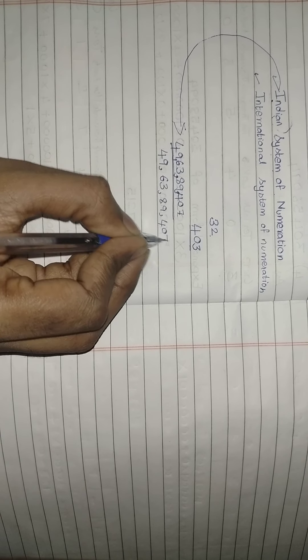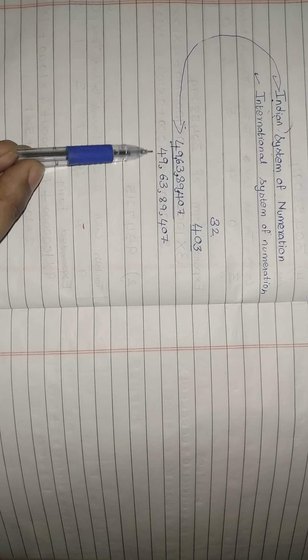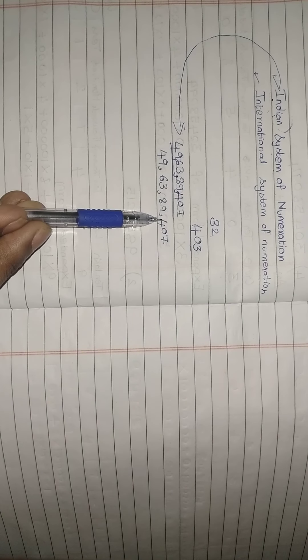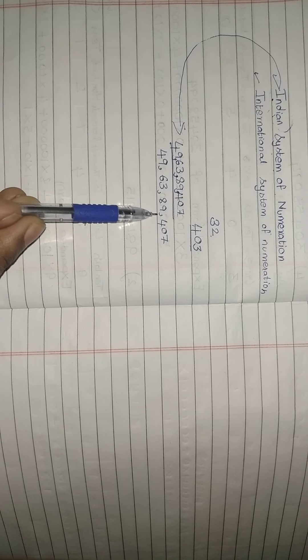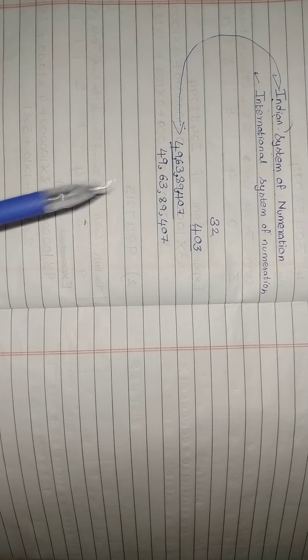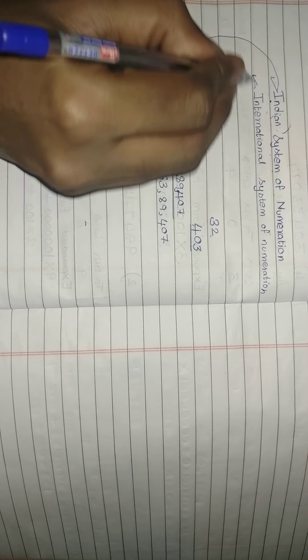When I place the commas, the number looks like this. Always in the Indian system of numeration you place commas like this: three digits from the last before the first comma, then two digits, comma, two digits, comma, and so on.